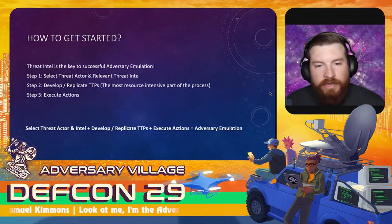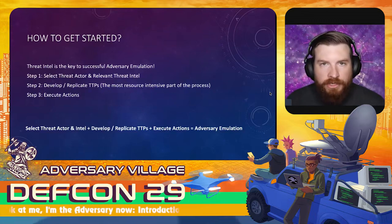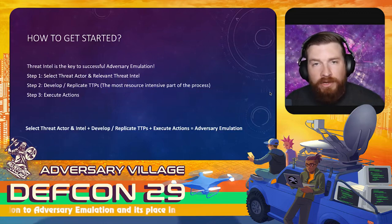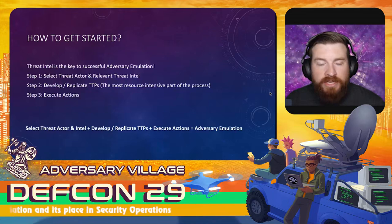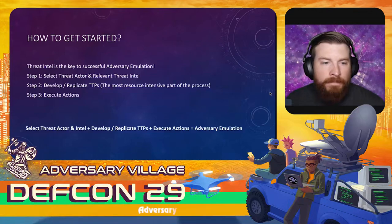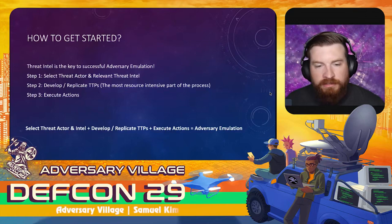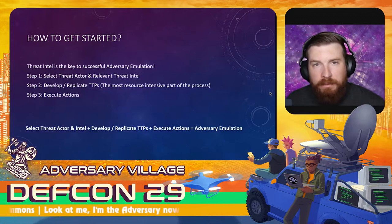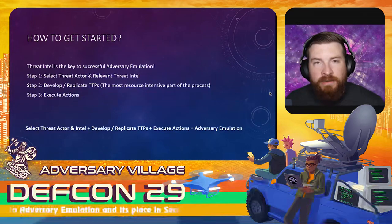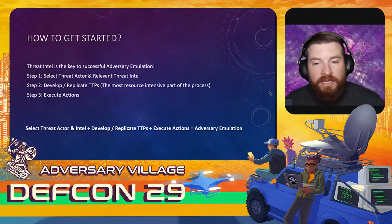Step one: select your threat actor and relevant threat intel. Pick your target APT, go to MITRE ATT&CK, look at the specific references and TTPs they use, then hop over to Malpedia for subsequent articles or blog posts about those threat actors in different environments — what they do when in environments, what their objectives are. Step two: develop and replicate those TTPs. If it's a simple command line action, it's straightforward — taken straight from the threat intel with minor modifications. If it's an actual payload, that may take more time, so keep that in mind when working under time constraints.